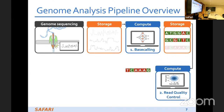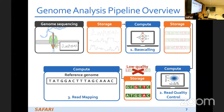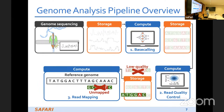In read quality control we determine whether a read is high quality or low quality. If it is low quality we discard it; if it is high quality we store it to continue with the next step. The third step is read mapping. In read mapping we compare the reads to the reference genome to determine if they can be mapped. If a read cannot be mapped we discard it; if it can be mapped we store the mapping information to results in storage.